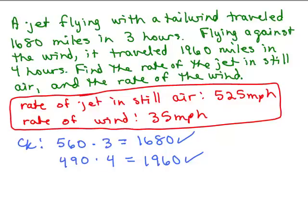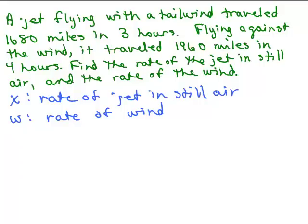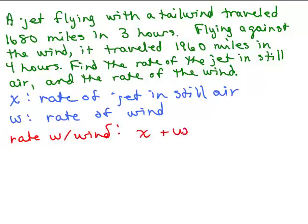I'm going to show you another way of thinking about this exact same problem. We still need to find the rate of the jet in still air and the rate of the wind. We could use X for the rate in still air and W for the rate of the wind, but instead of writing a chart, we can think about it a little differently. The actual rate going with the wind is X plus W, and going against the wind is X minus W.